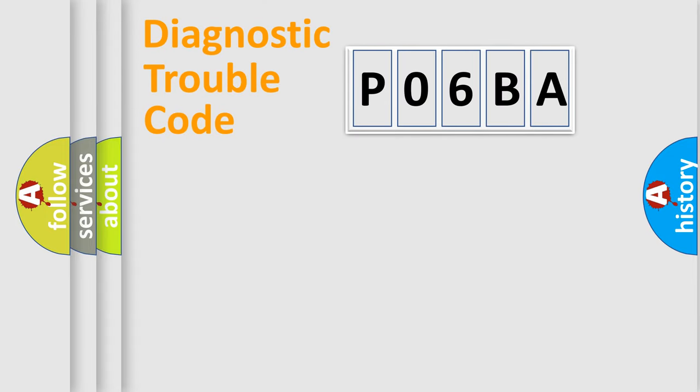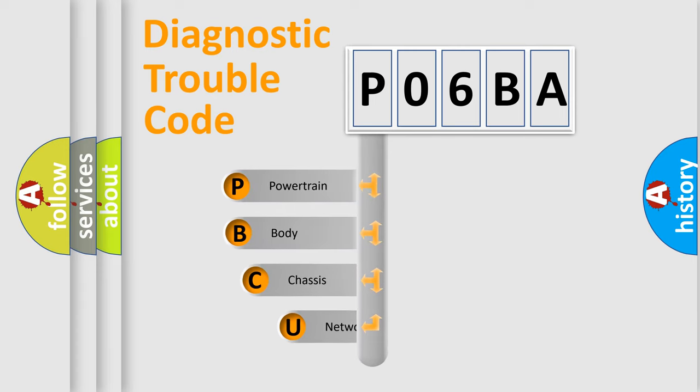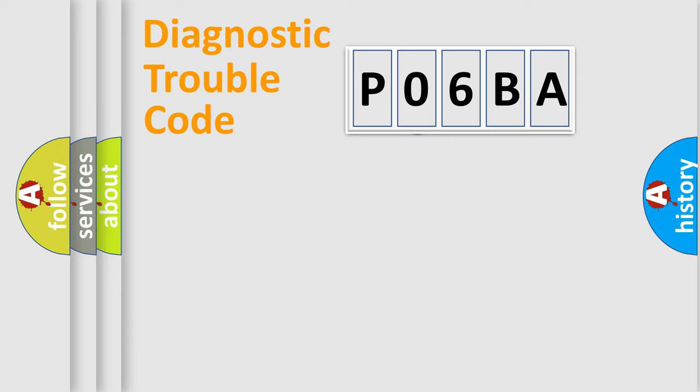First, let's look at the history of diagnostic fault code composition according to the OBD2 protocol, which is unified for all automakers since 2000. We divide the electric system of the automobile into four basic units: Powertrain, Body, Chassis, and Network. This distribution is defined in the first character code.